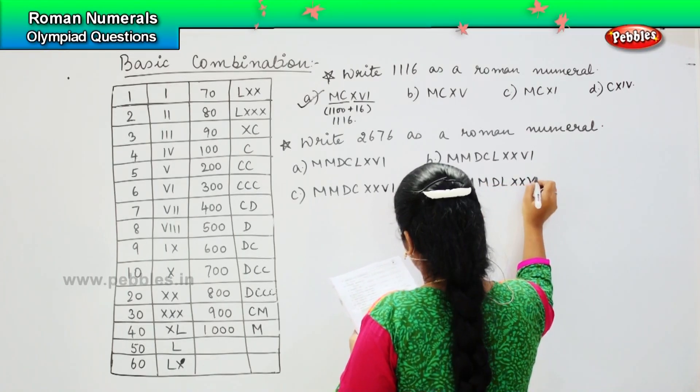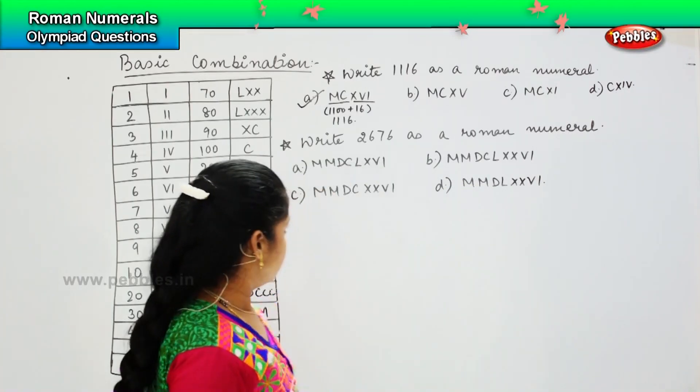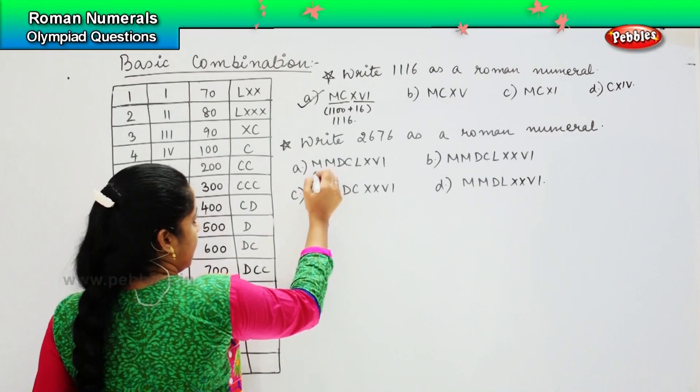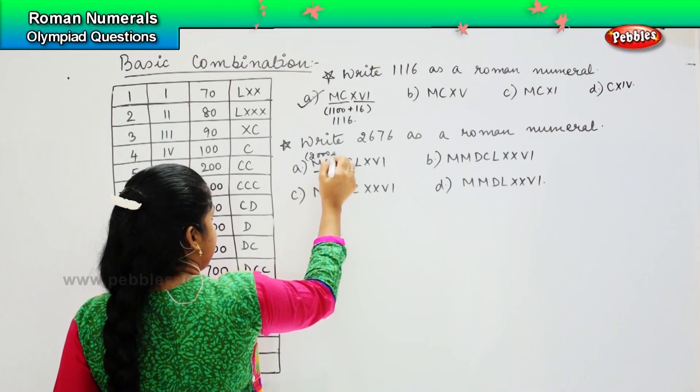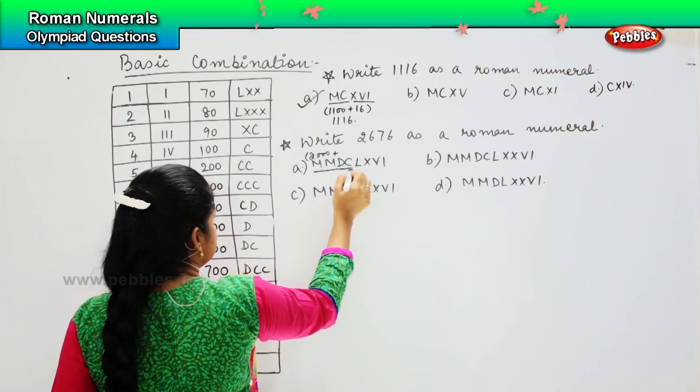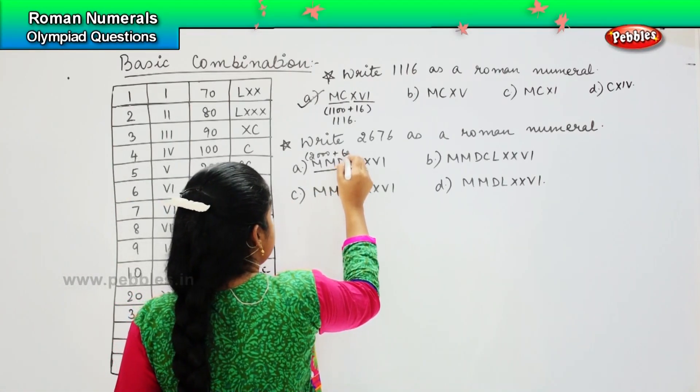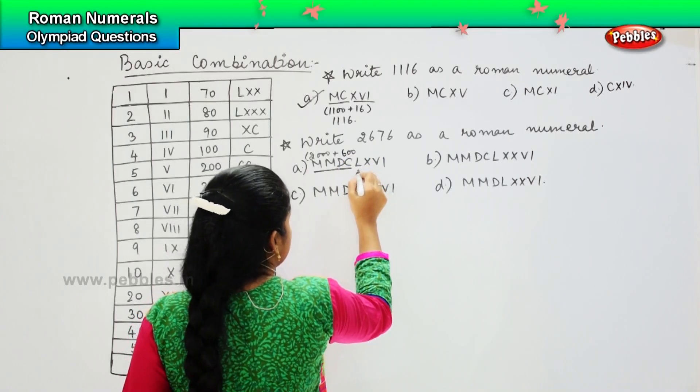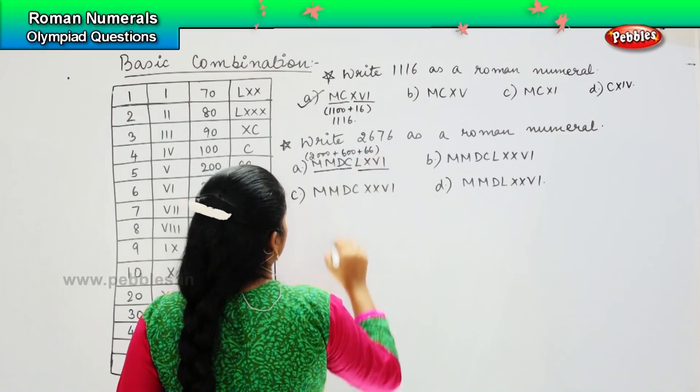Plus DC - DC is six hundred - and LXVI is sixty-six. So 2666.